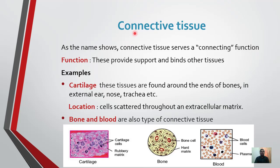Second type of animal tissue is connective tissue. As the name shows, connective tissue serves a connecting function. Just as bricks in a building are connected by cementing material, similarly our skeletal system and different structures in our body — our bones — are connected by connective tissue. Function: these provide support and bind other tissues together.